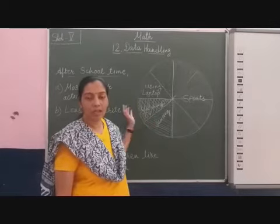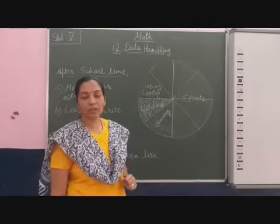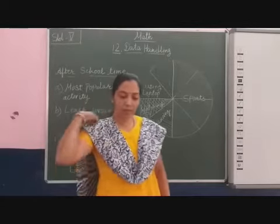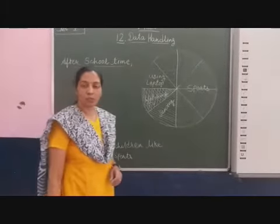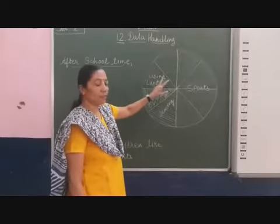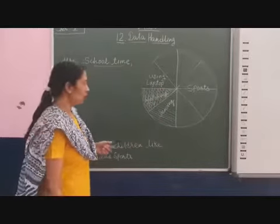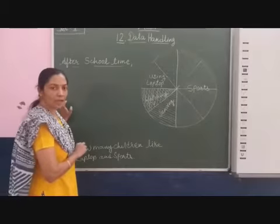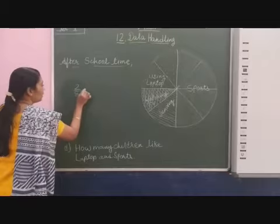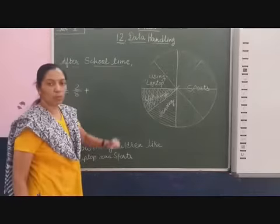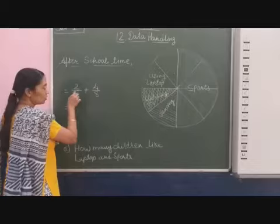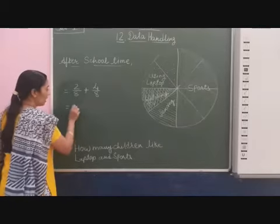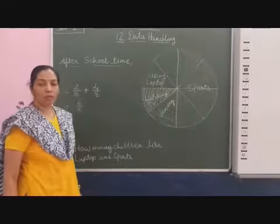But now they are asking for the number of students. For that we will do the calculation. The question is: how many children like laptop and sports? These are two activities. First, we will write in fraction form. Using laptop: there are two-eighth parts. For sports: it represents four parts out of eight. So we add — two-eighths plus four-eighths equals six-eighths.